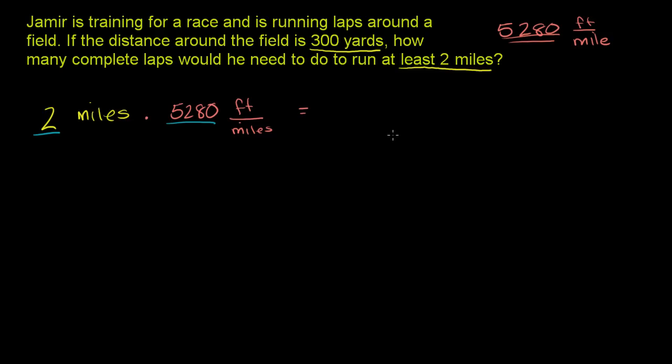So what is that going to be? 2 times 80 is 160. 2 times 200 is 400. So it's going to be 400 plus 160 is going to be 560. And then 2 times 5,000 is 10,000. So it's 10,560. And then the miles cancel out, and we are just left with feet.